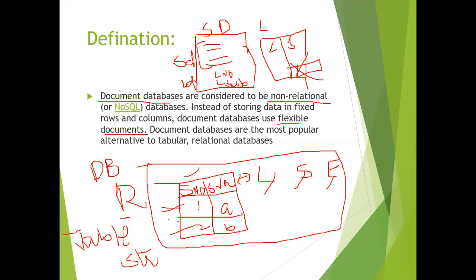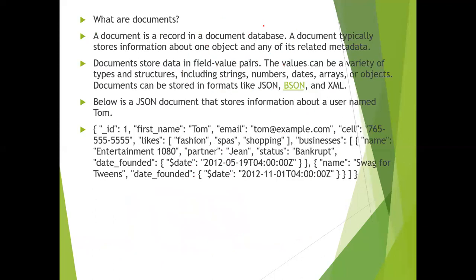In a document database, it is not necessary to have only text data — it can include graphs, pictures, and more. Everything is treated as a document. The relational model uses only rows and columns, but document databases support more flexible, tabular paragraph-style data models. Document databases are better than relational databases in this regard.